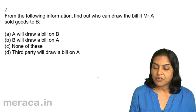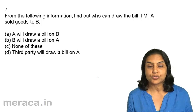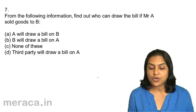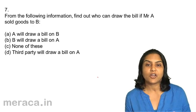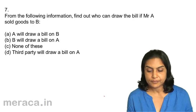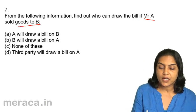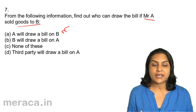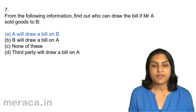Question 7: From the following information, find out who can draw the bill if Mr. A sold goods to B. A. A will draw a bill on B. B. B will draw a bill on A. C. None of these. D. Third party will draw a bill on A. A sold goods to B, so B will accept the debt. Answer 7A is correct.